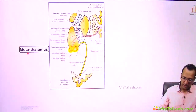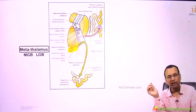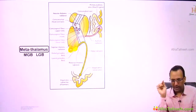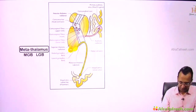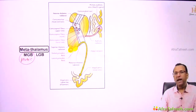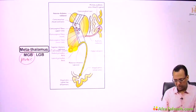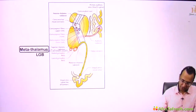Now let us talk about the metathalamus. The metathalamus has two geniculate bodies: the medial geniculate body, which is for the auditory pathway, and the lateral geniculate body, which is for the visual pathway. Let us look at the auditory pathway first.